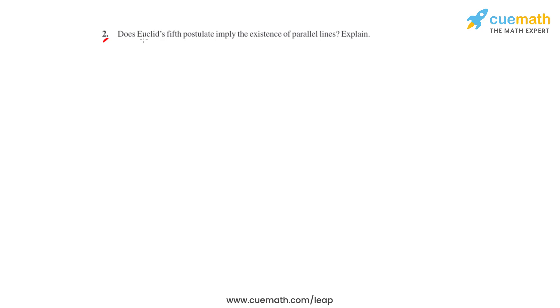Question 2 asks: does Euclid's fifth postulate imply the existence of parallel lines? The answer is yes, Euclid's fifth postulate does imply the existence of parallel lines. Before we explain why, let's understand the Euclid's fifth postulate.